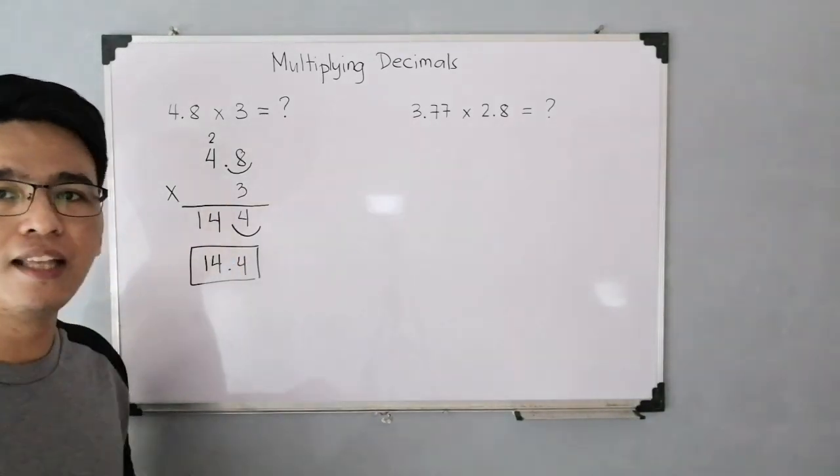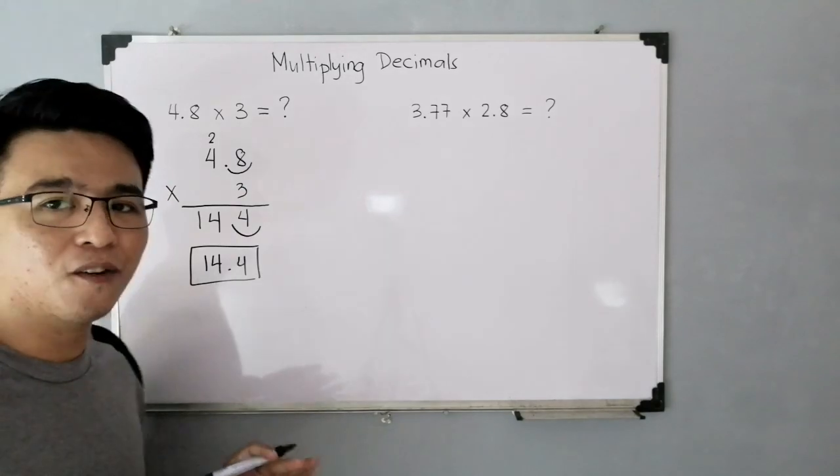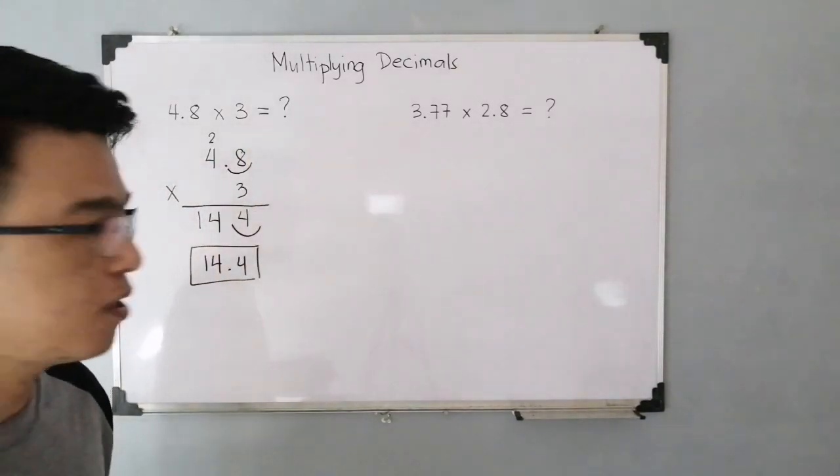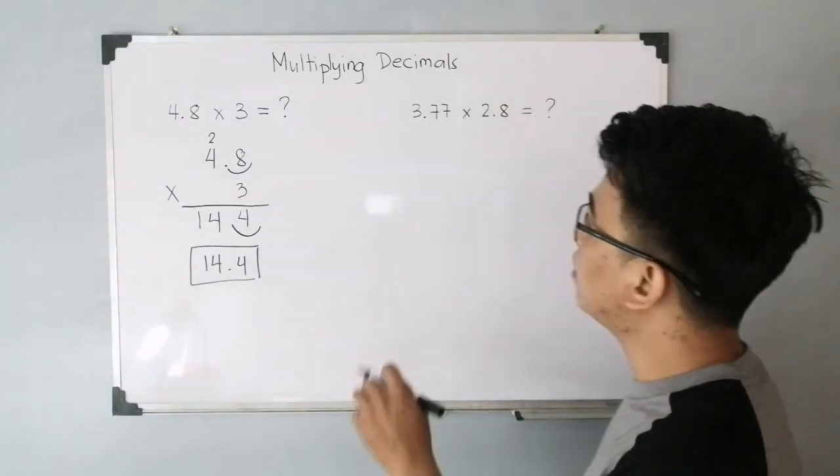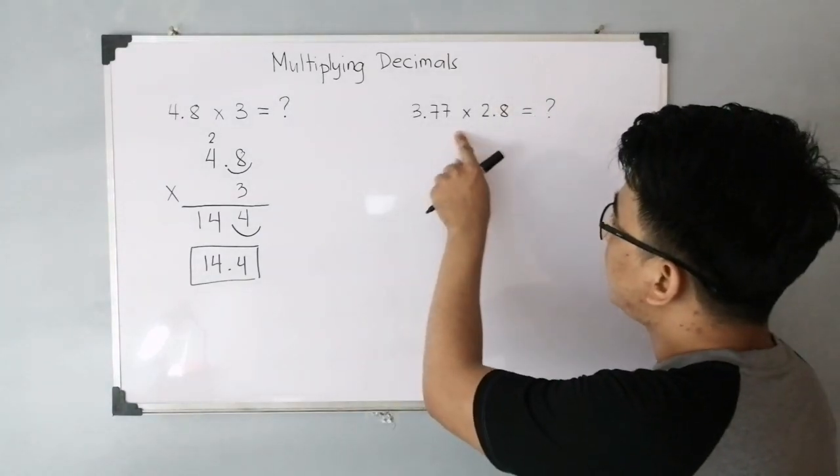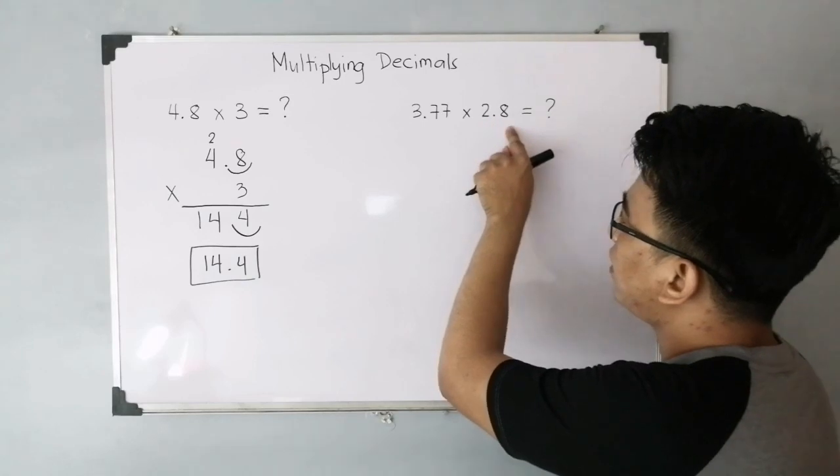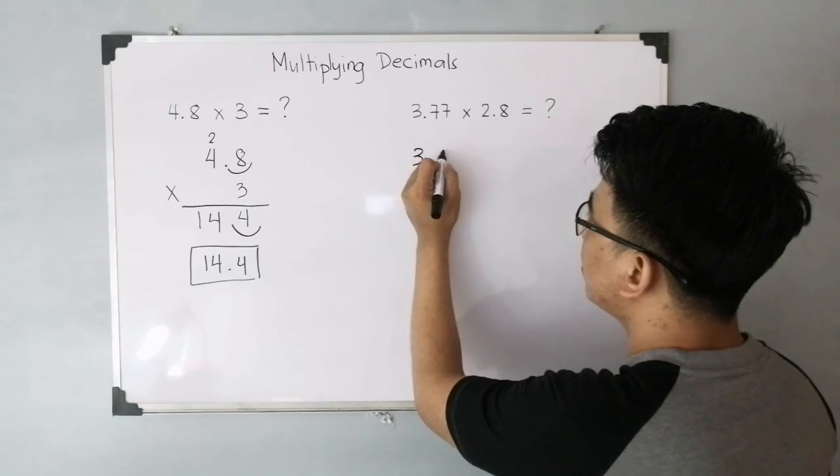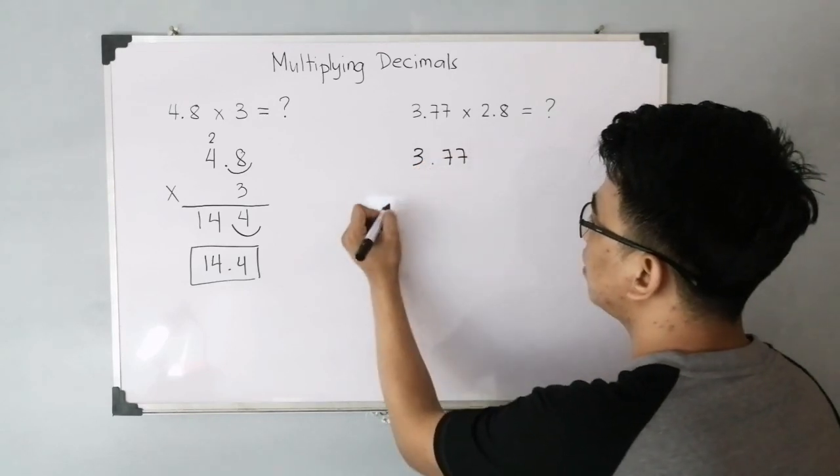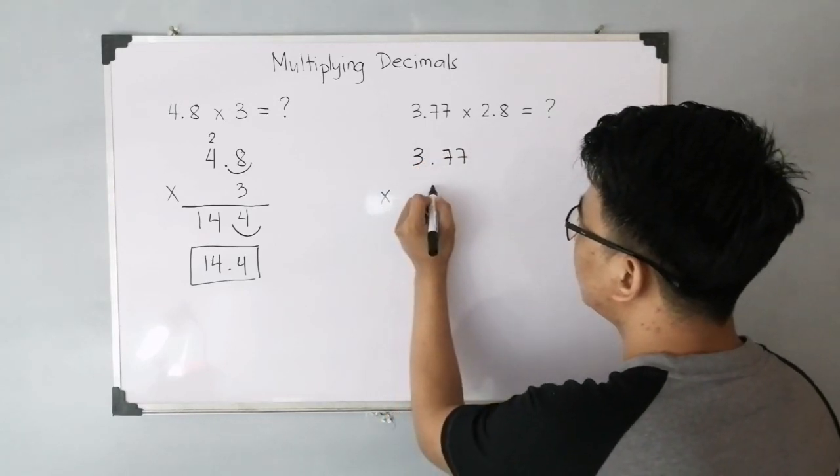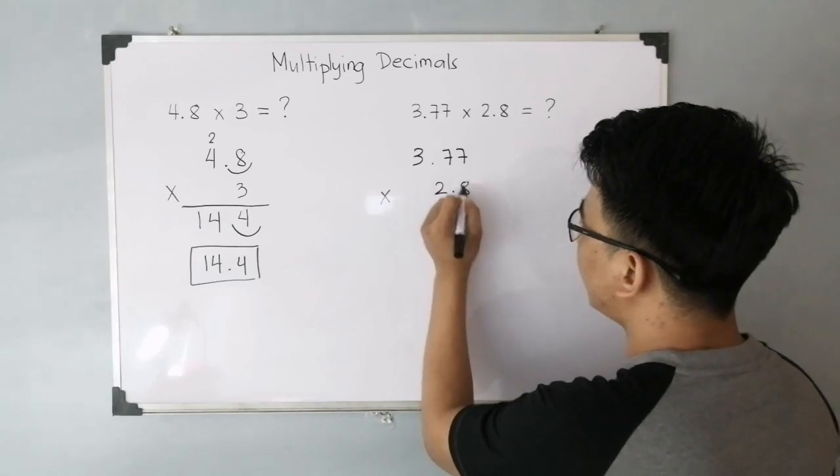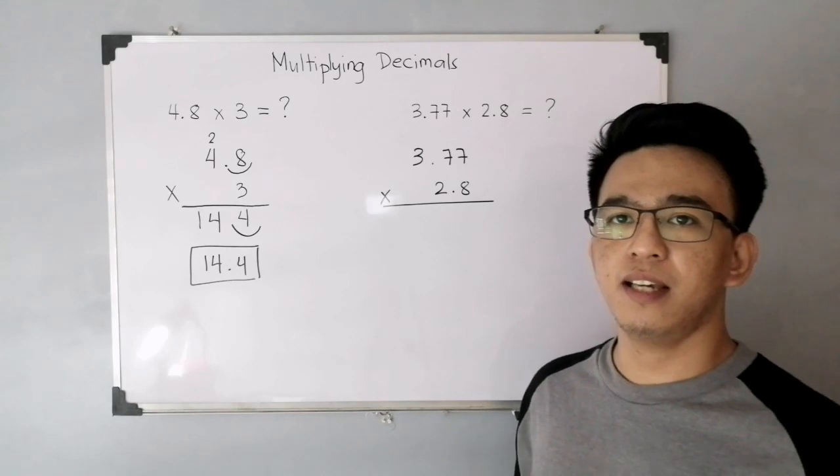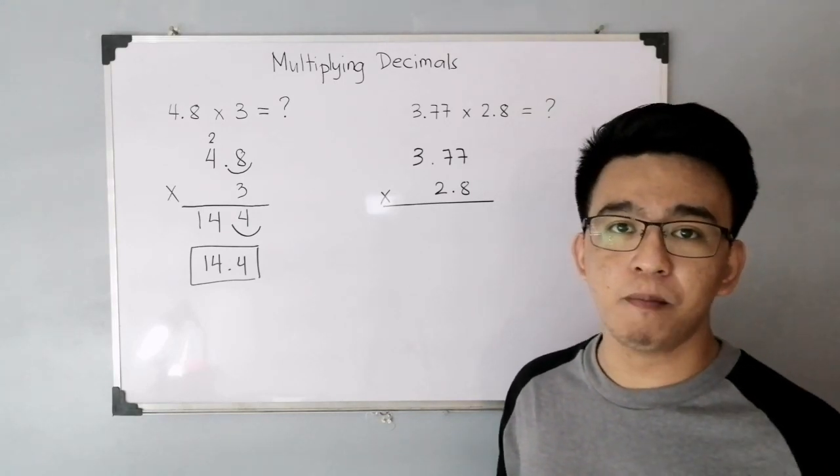So, I hope from the first example, you already know the process on how to multiply this. So, let's move on with item number 2. We have here 3.77 times 2.8. Okay? Let's align it vertically. You have 3.77 times 2.8. So, reminder: ignore the decimal points. Think that you're just multiplying whole numbers.